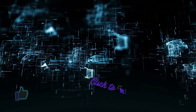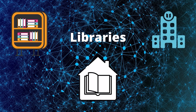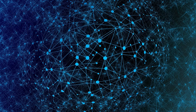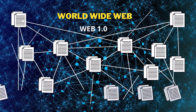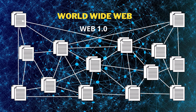Before the advent of the World Wide Web, if you needed to find a reference of a document, you would have to go to a library or get a copy of the material. With the launch of the World Wide Web, documents started becoming available online. If a document had a hyperlink, you could just click the link to go to the next document — documents were interconnected through various links. This was Web 1.0.